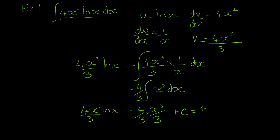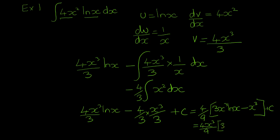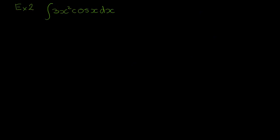Tidying that up, we bring out 4/9, leaving us with (4x³/9)(3 ln(x) − 1) + c. Now here's example two: we have 3x² as one function and cos(x) as the other function, and for this example we're going to use 3x² as our u.